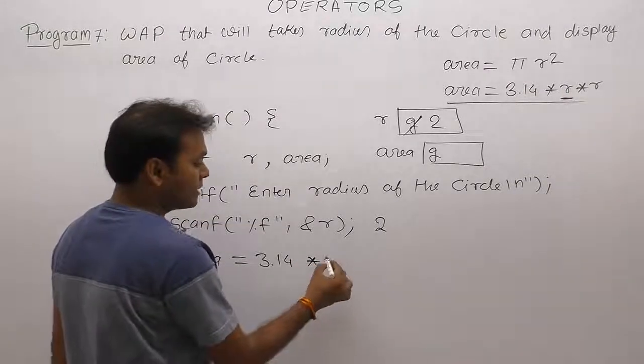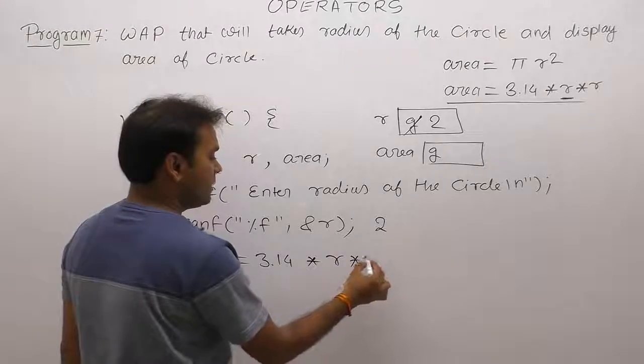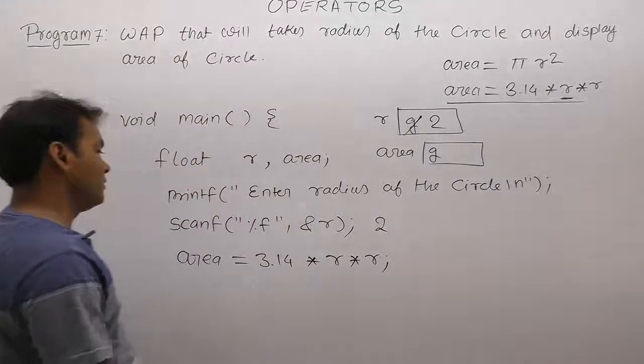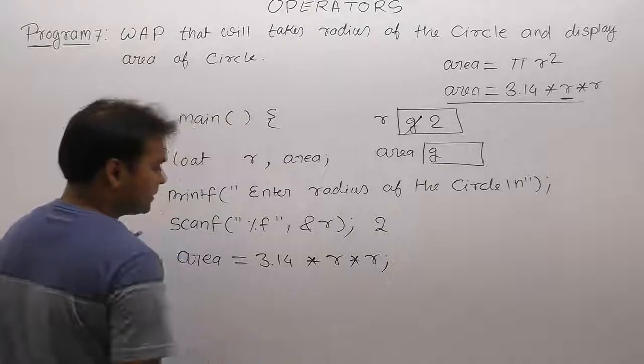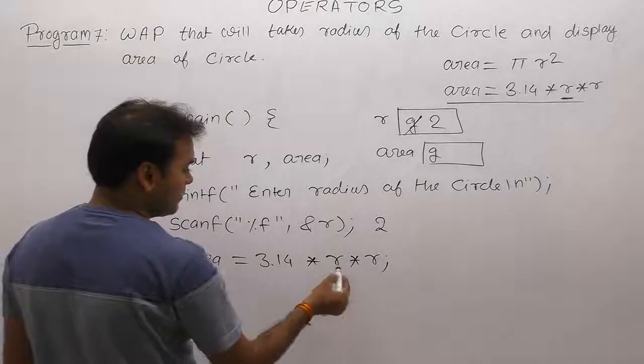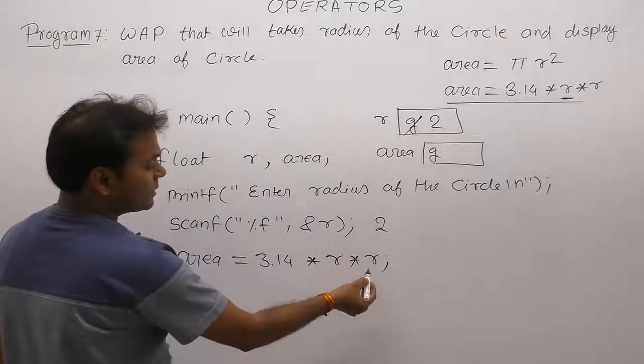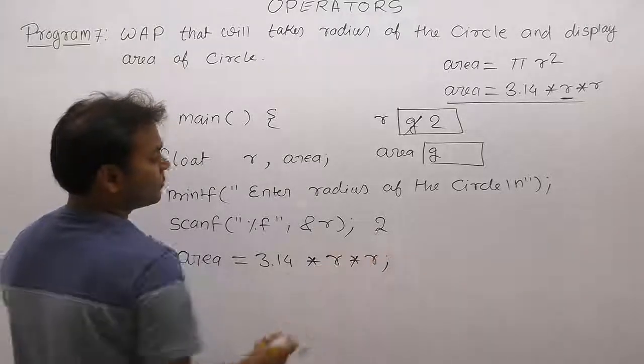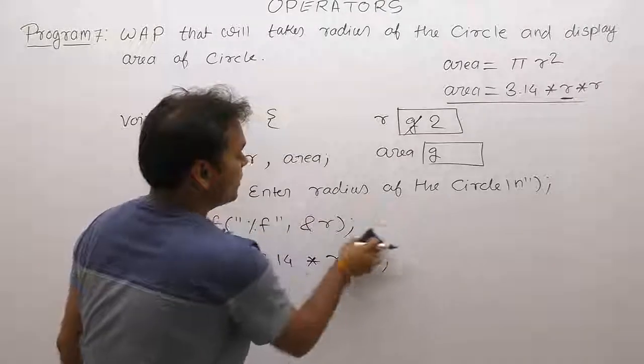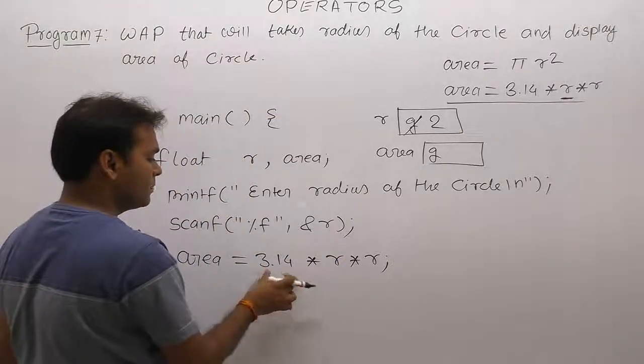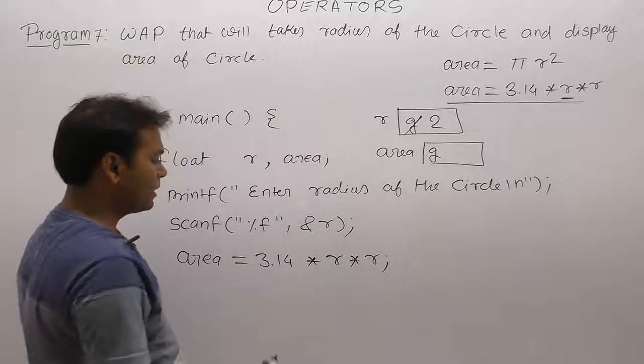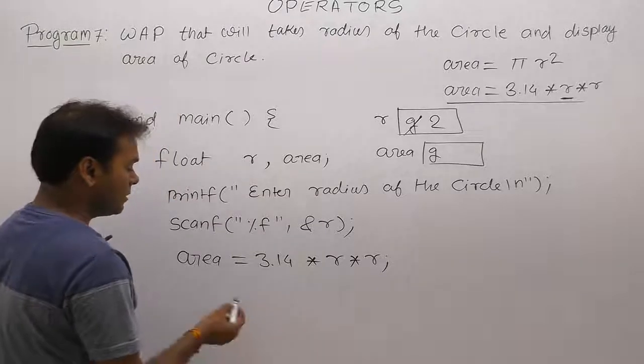R square is similar to r multiply by r. Whatever result is calculated from the expression, solve first r multiply by r. Value is what? 2 multiply by 2 is 4. 4 multiply by 3.14, something I think 12 point something. The result is 12 point something value.